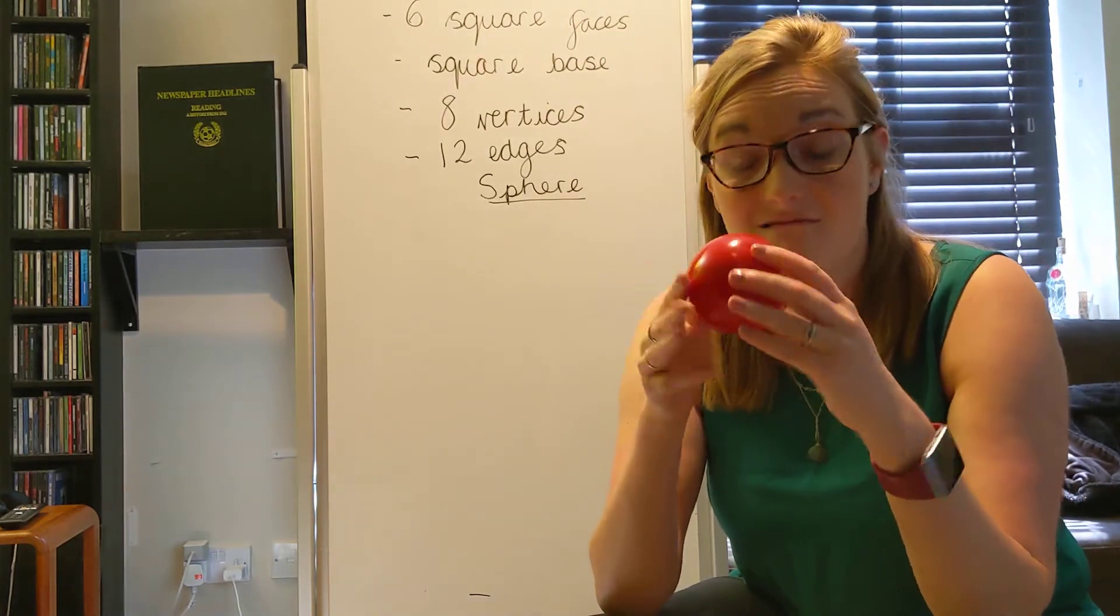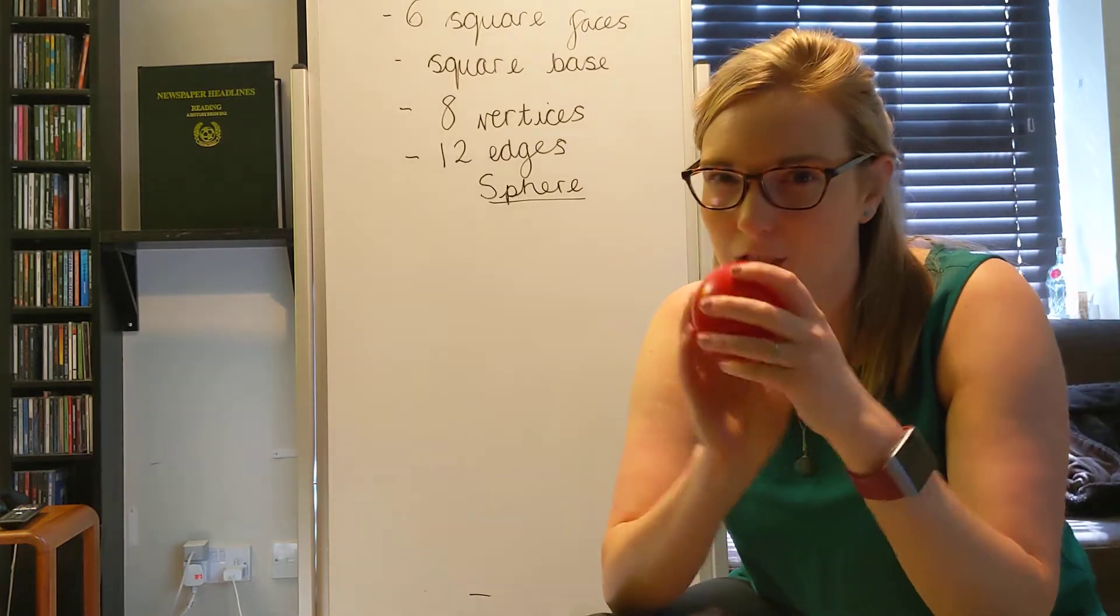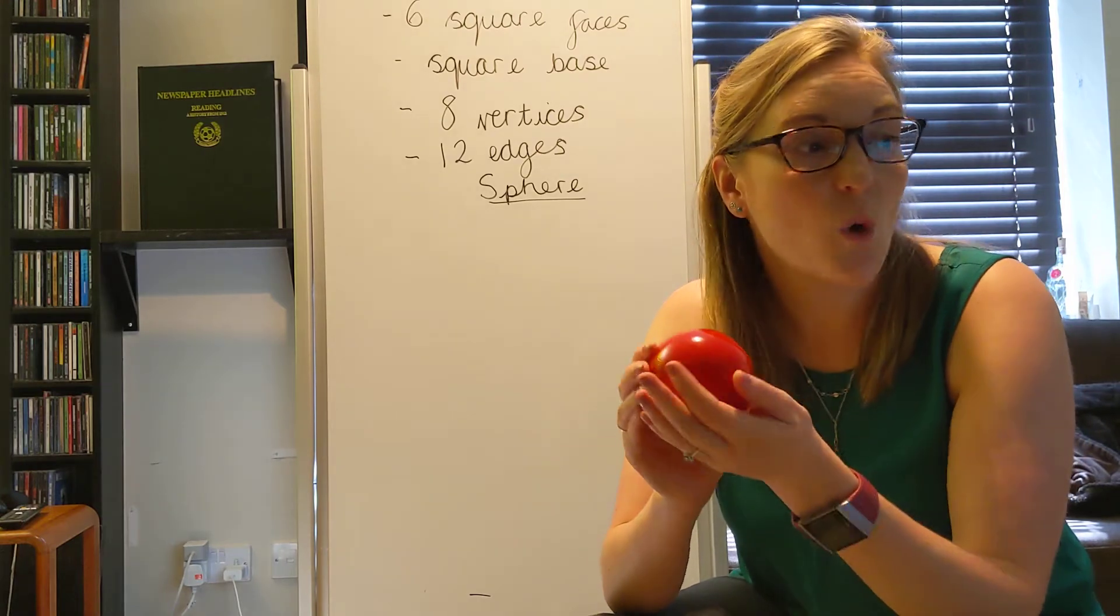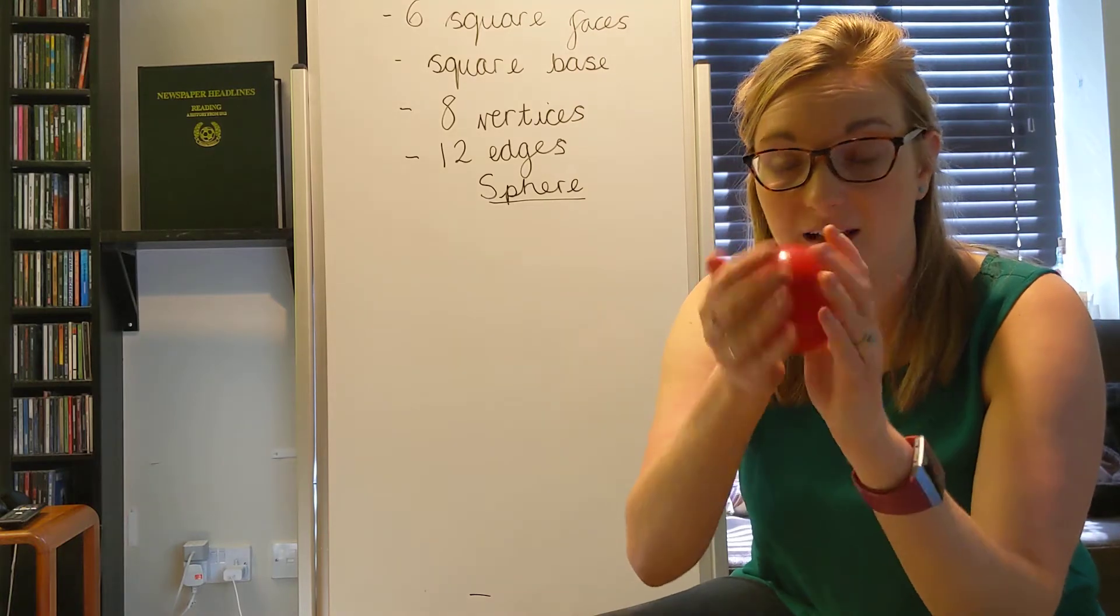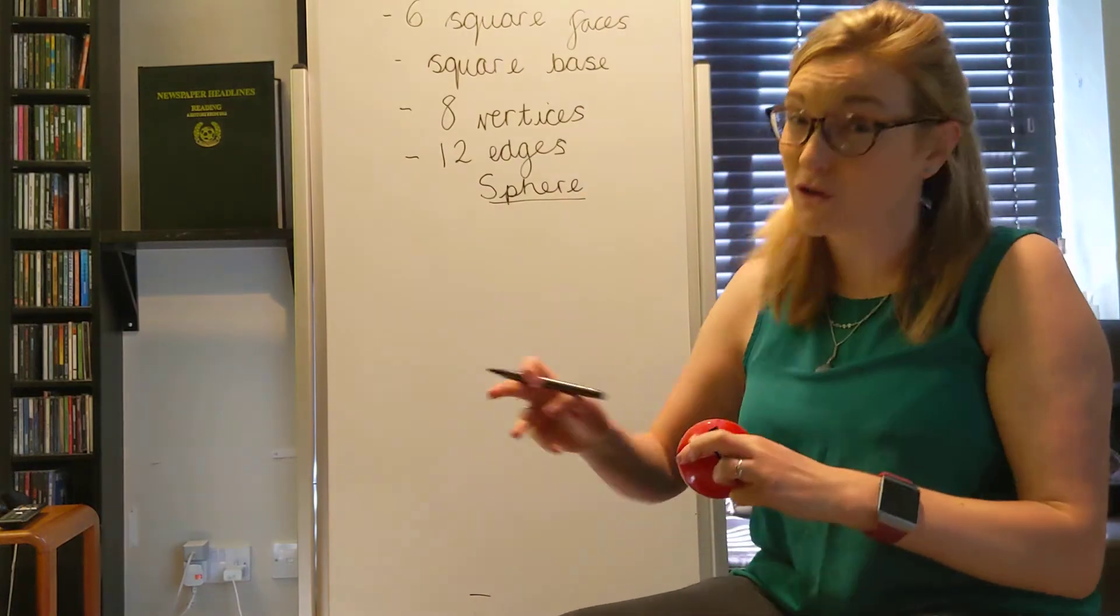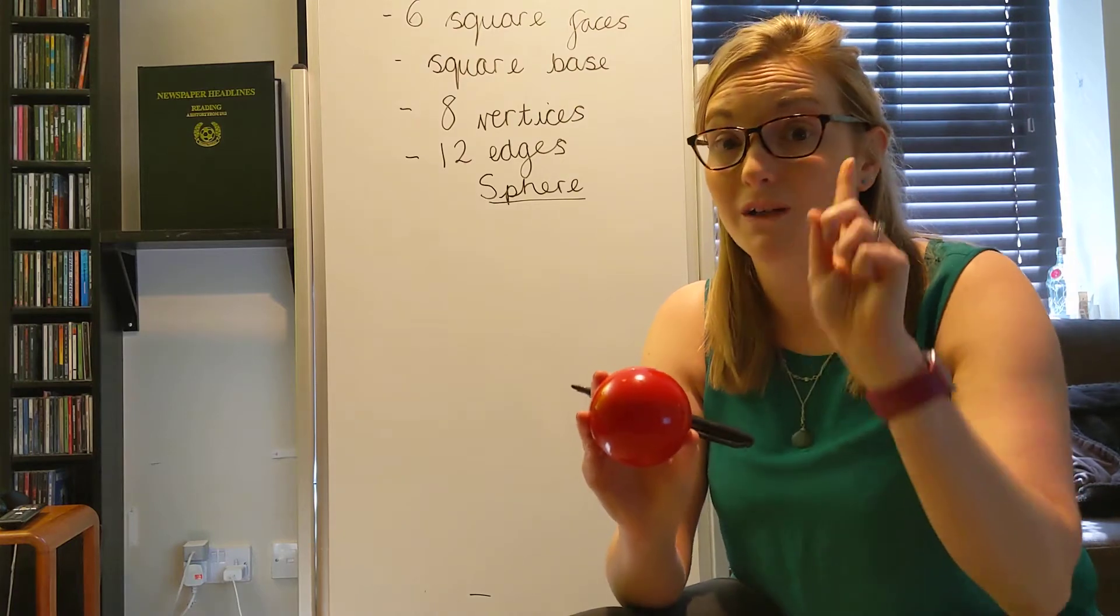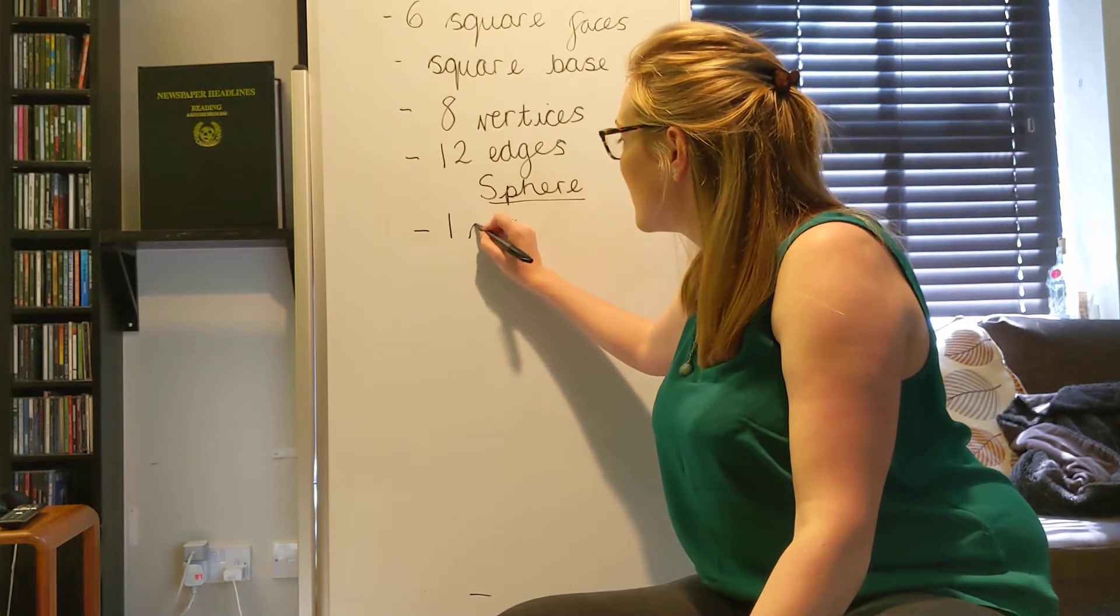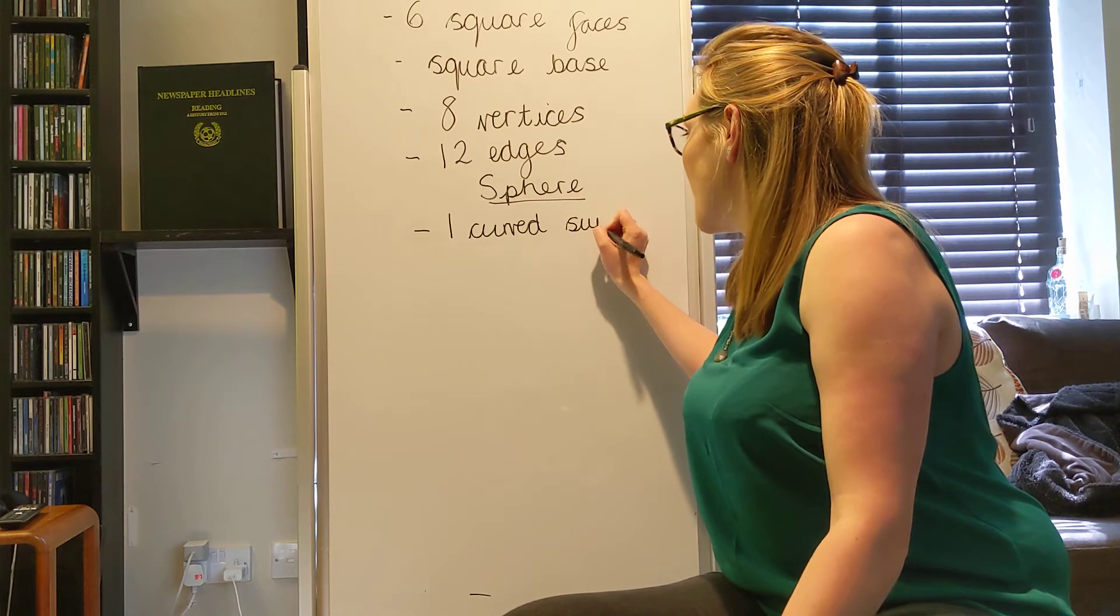And we are going to learn some of the properties of a sphere. So a sphere is round. It's all the way round. But we're not going to use the word round. We are going to use the mathematical language. So it has one, because there's only one surface to this, one curved surface. And it's not a face, because it's not flat. It's all the way round. So it's one curved surface.